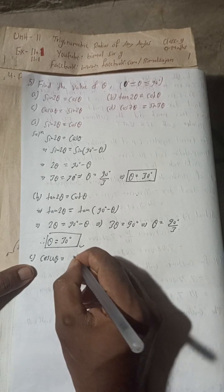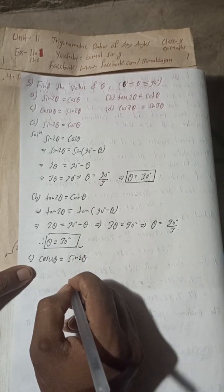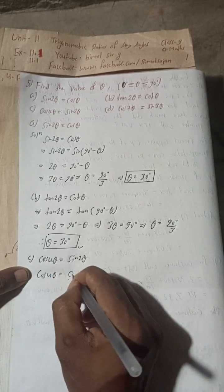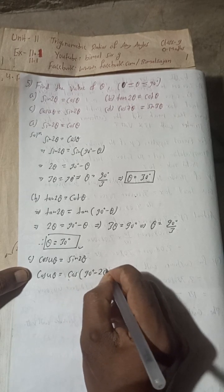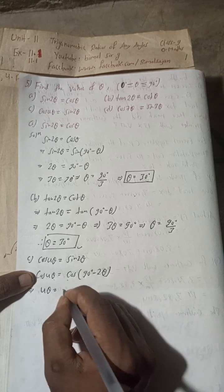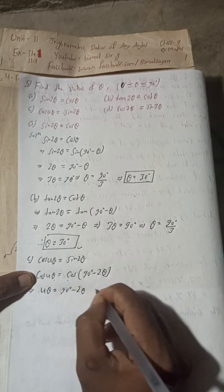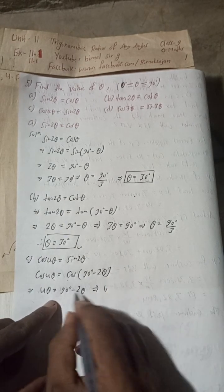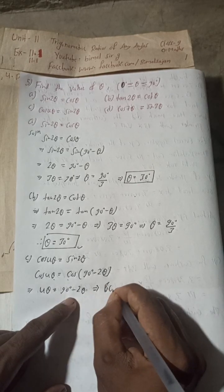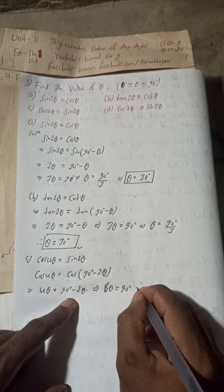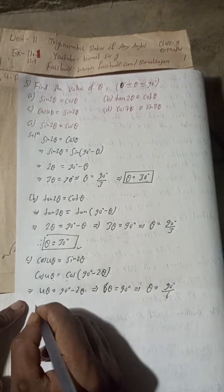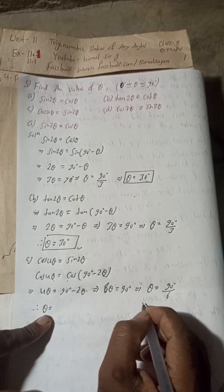Part c: cos 4θ = sin 2θ. Now, sin 2θ can be written as cos(90° − 2θ). So this implies cos 4θ = cos(90° − 2θ). Equating the angles: 4θ = 90° − 2θ. Bringing −2θ to the left gives 4θ + 2θ = 6θ = 90°, therefore θ = 90° ÷ 6 = 15°.